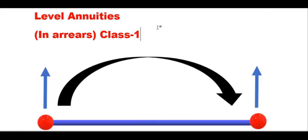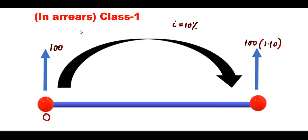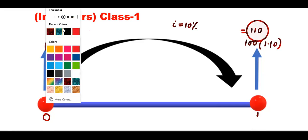Till today we have discussed all the problems where we had only one payment. In this class we will move from one payment to many payments. Here we found the future value of 100 — if I is 10%, that used to be 110, and there is only one arrow here. That means we were interested previously to find the future value after one year. Suppose you want to invest 100 now — how much can you expect after one year if the rate of interest is 10% per annum?